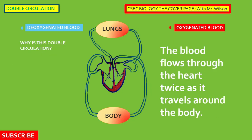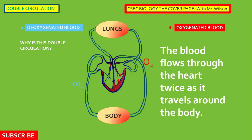Why is it called double circulation? Double circulation is so named because the blood flows through the heart twice as it travels around the body. The diagram here will show. Let's follow the blood from the lungs: oxygenated blood leaves the lungs, travels through the heart, goes down via the aorta through the body, and then back up through the vena cava to the heart again, and then back to the lungs.